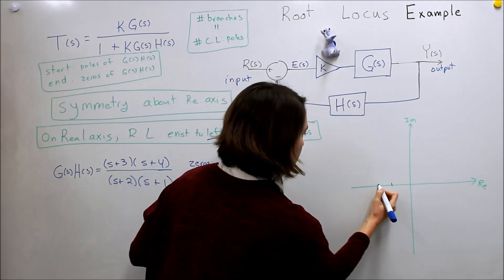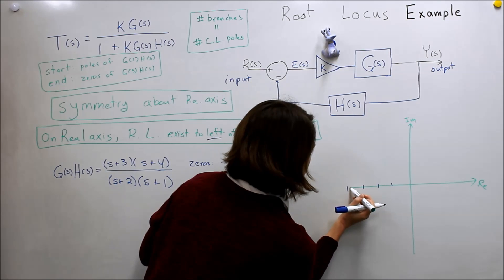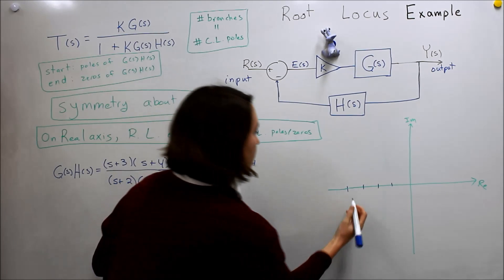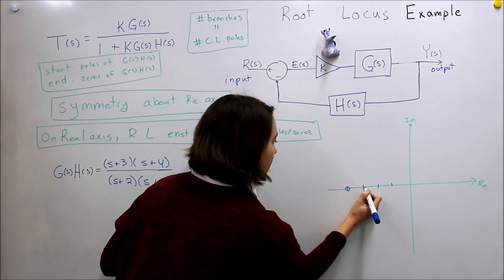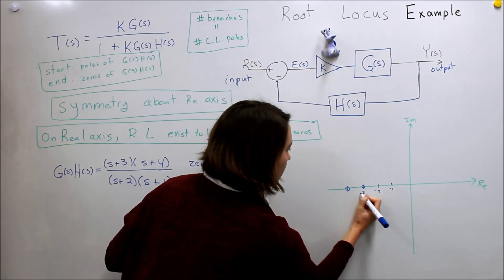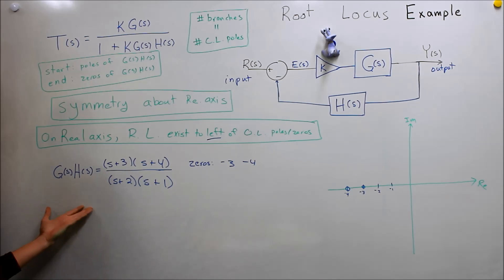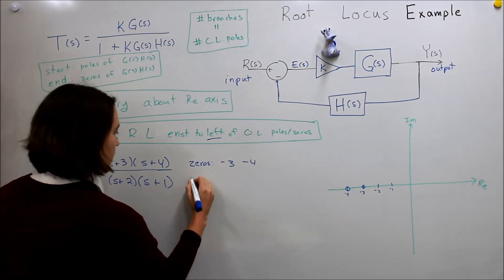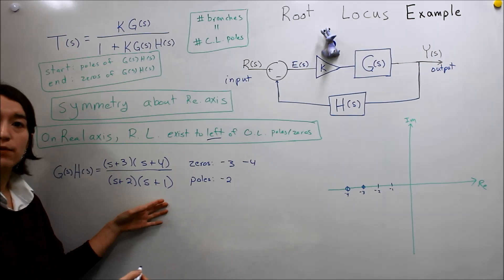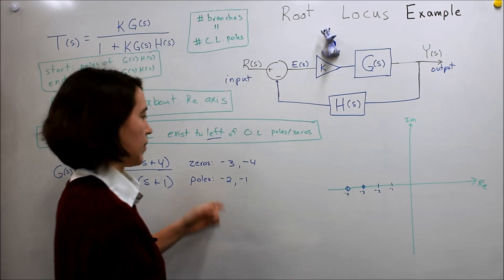We can go ahead and plot that on our S-plane. So we draw our zeros at negative four and negative three. Now we need to find our two poles. We have negative two as a pole and negative one as a pole. So fairly straightforward, and we can draw our poles in here.